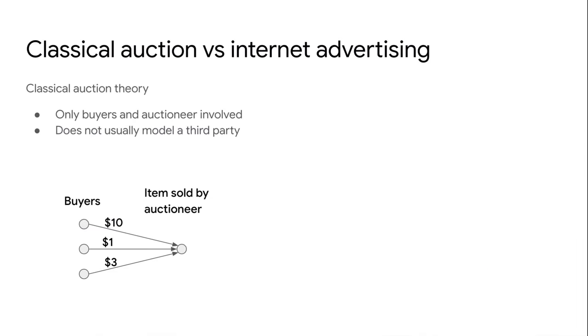Traditional auction theory usually only assumes a setting with two parties: an auctioneer that has a good they want to sell, and buyers that wish to obtain such good. It is assumed that these parties exist in a vacuum, so the outcome doesn't affect any other party.